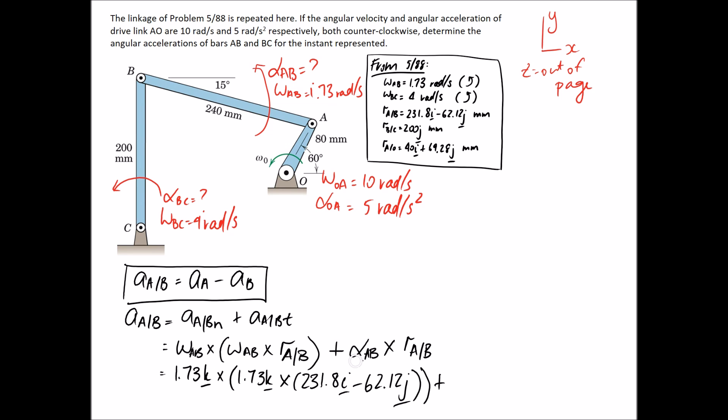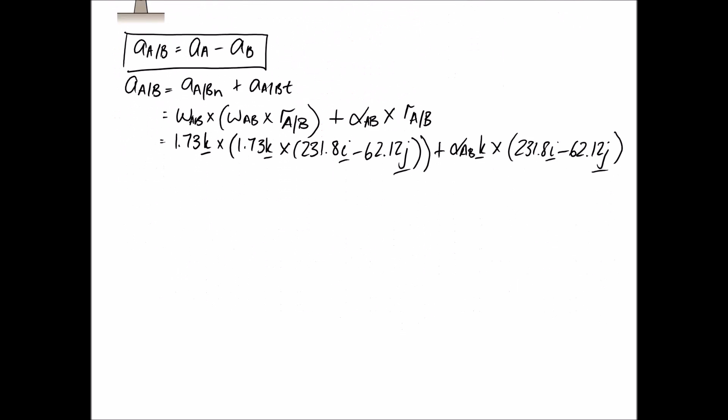And then alpha AB is what we're trying to determine. We're assuming it's the positive direction, so it just gets a K. And again, the radius is the same as up here.